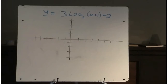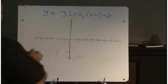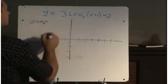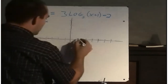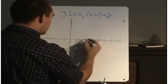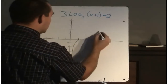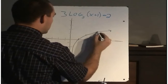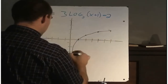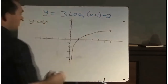Just like the exponential graph, we should be able to do transformations to this log graph. Hidden in this equation is the basic log graph, which is y equals log base 2 of x. Let's put these points on here quickly: when x is 2, y is 1; when x is 4, y is 2. I'm going to be working with these three points and the asymptote, which is the y-axis.